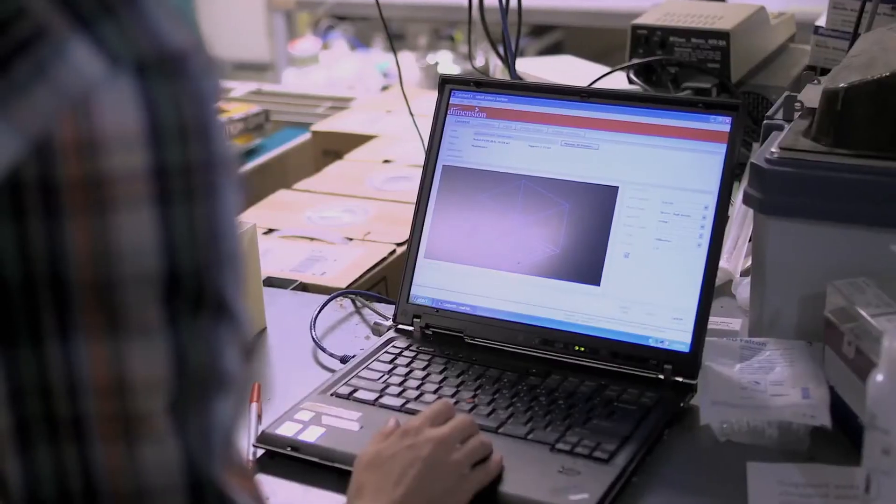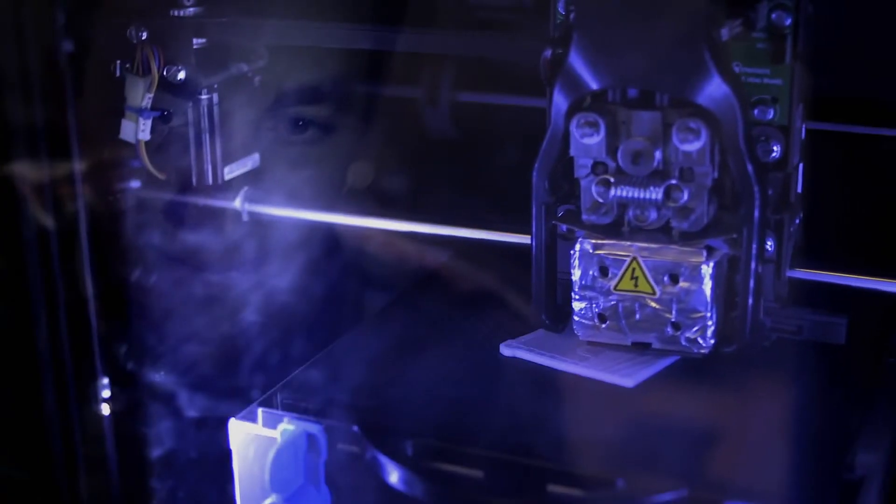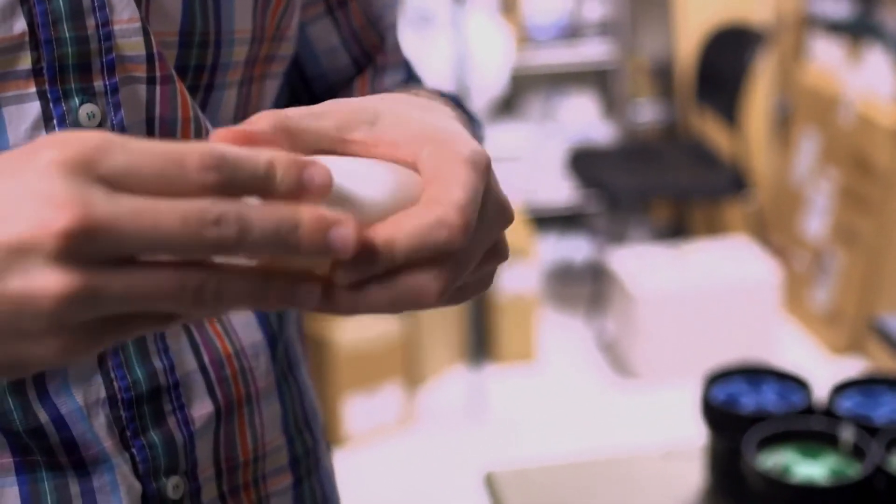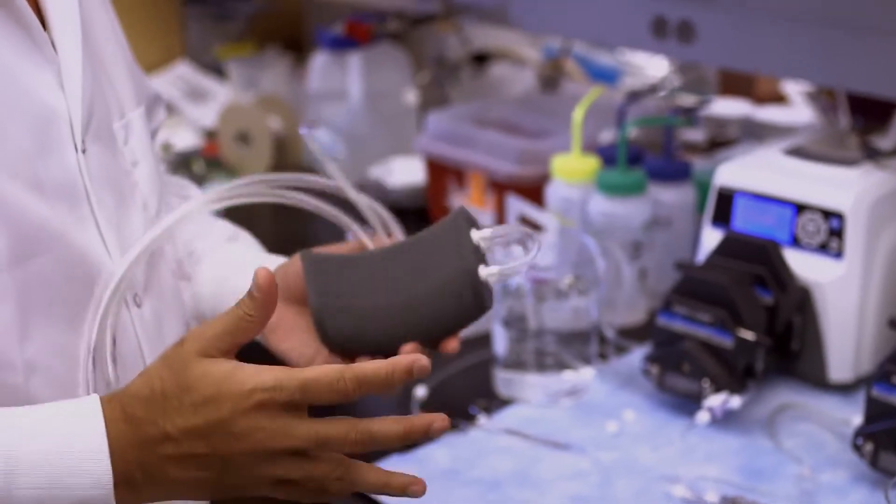3D printing is a big step in helping us prototype. We can design different versions so we can look at it. Part of engineering is you got to look and feel. It's the right size. Can a surgeon implant that? We're testing and optimizing each of those components individually to make them as best as they can be and then eventually bring them together.